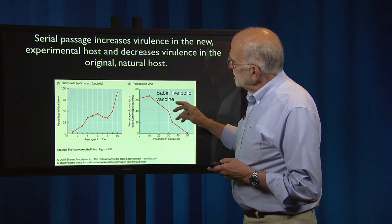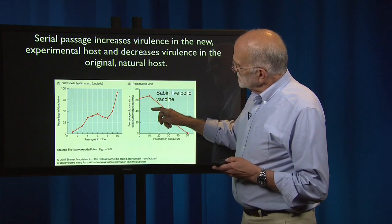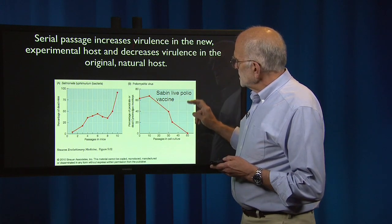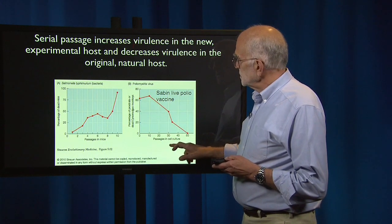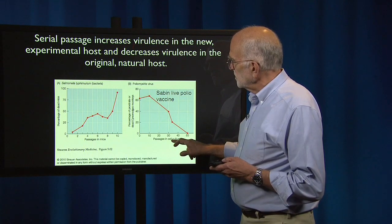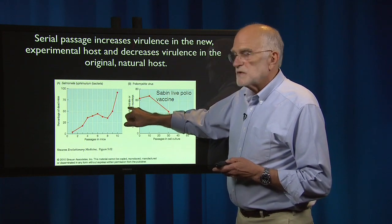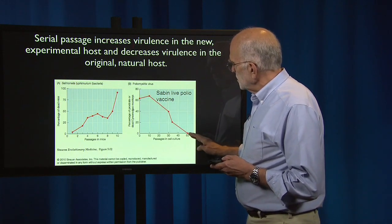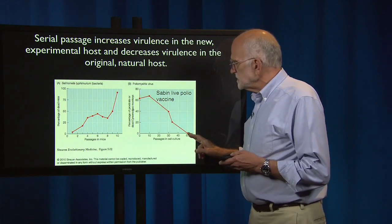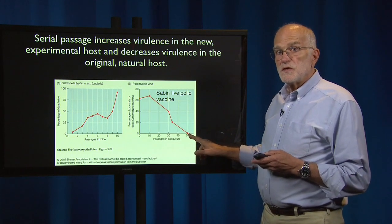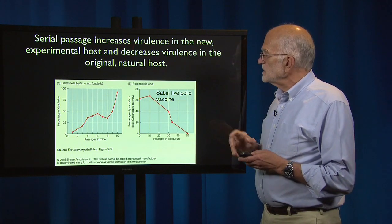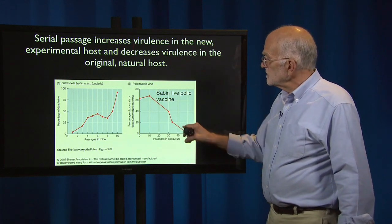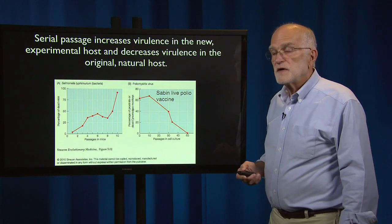Here is what happened with the ability of poliovirus to kill monkeys when it is being passaged in cell culture. Cell culture is genetically uniform, and the monkey is the test host. The longer it's passaged in cell culture, the less able it is to kill monkeys. After 50 passages, it was judged to be attenuated and safe for use. That is in fact how the Sabin live polio vaccine was originally produced — these are the actual data from the production of that vaccine.